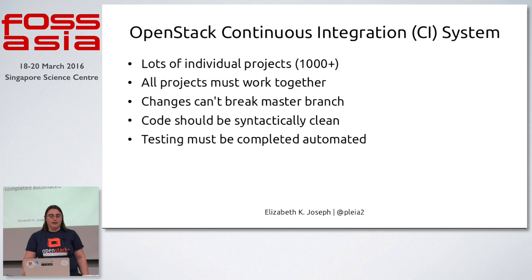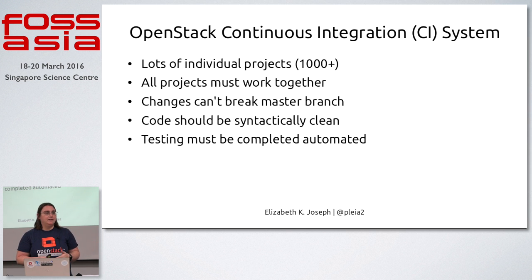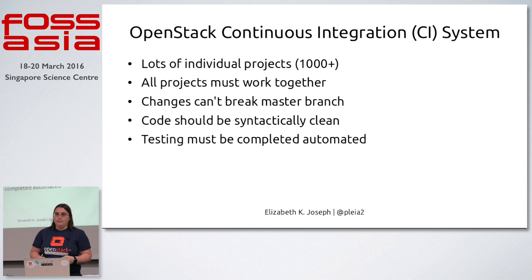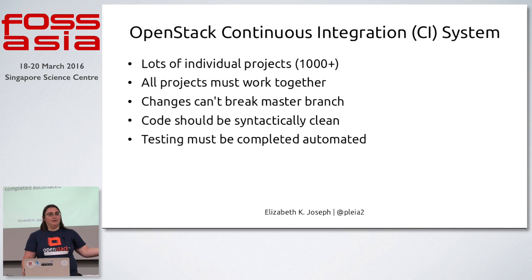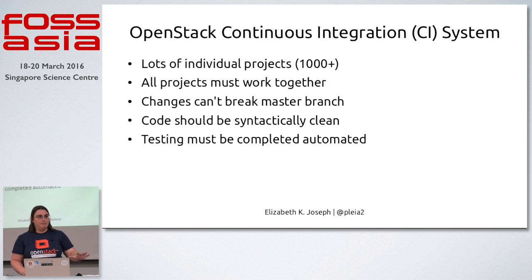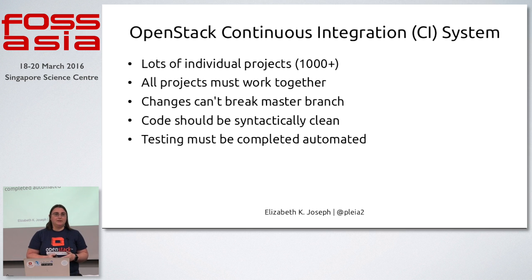OpenStack itself has over a thousand projects, and they need to work together. We have a whole system to make sure we're doing unit tests, functional tests, and integration tests so that a change to one component won't break another — for example, a change to networking shouldn't break compute. We also have hundreds of companies working on OpenStack, so we don't want to break the master branch. Testing is completely automated because we have patches coming in every minute from developers all around the world.